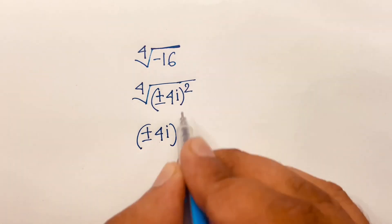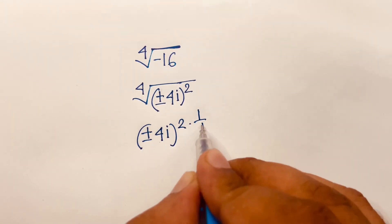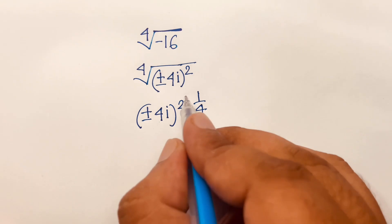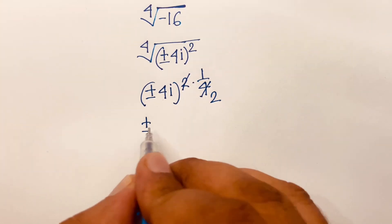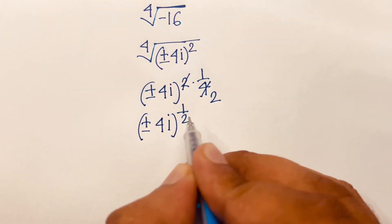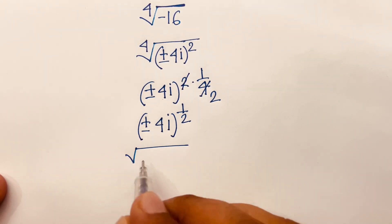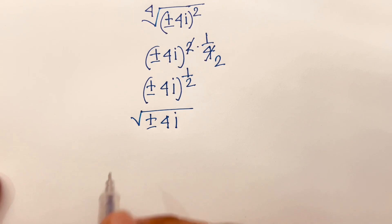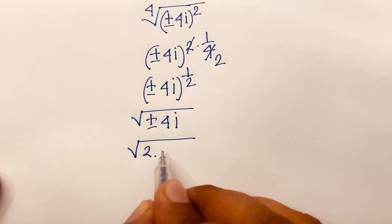The 4th root means the power is 1 over 4. So 4 divided gives us 2, meaning the expression becomes ±4i to the power of 1/2, which is the square root of ±4i.